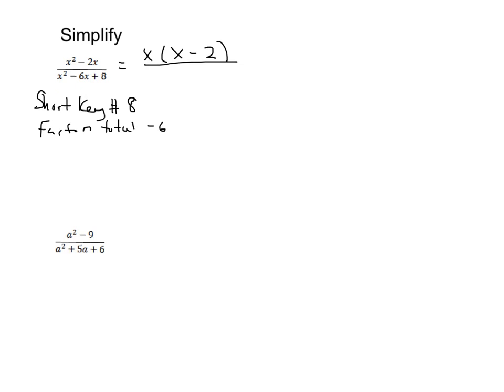What are the factors of 8 that total negative 6? Well, this is why we worked so hard on factoring over the last couple weeks. Those factors are going to be negative 4 and negative 2. So this denominator is going to factor into x minus 4 and x minus 2.